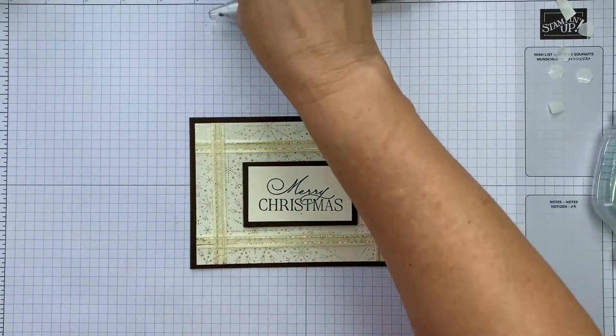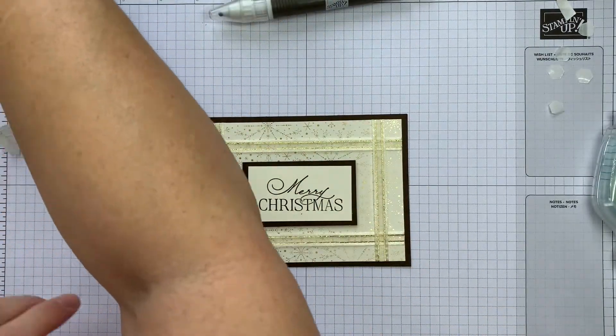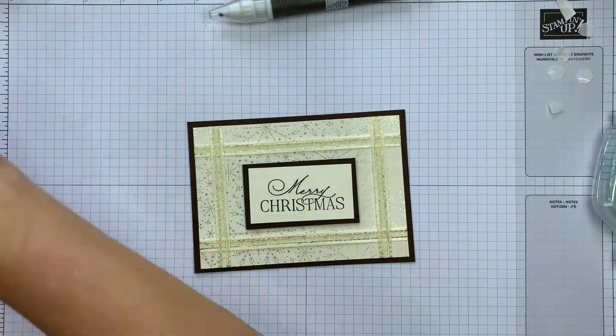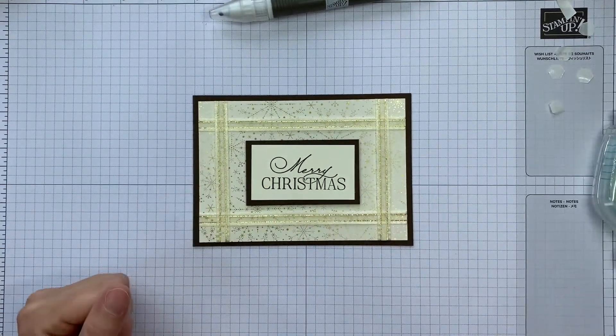And I'm just going to center that between my ribbons. Just got a little bit of adhesive on there. And I've got an old eraser. There we are. And that is our quick card for today.